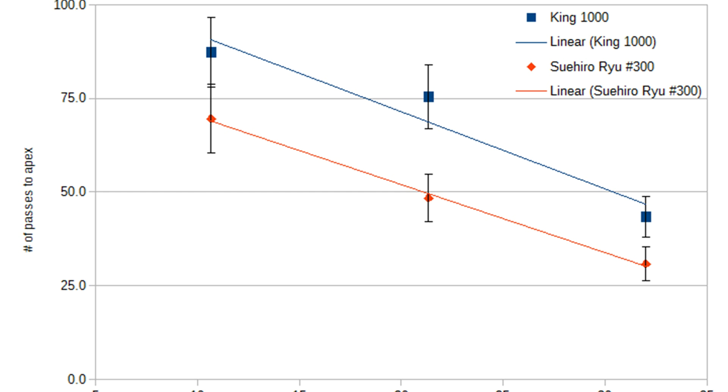The King 1000 is an older generation Japanese stone. It has a resin bond, relatively weak, and breaks down very fast. Ten psi is very high pressure for the King 1000.